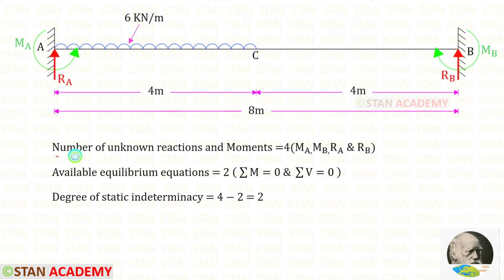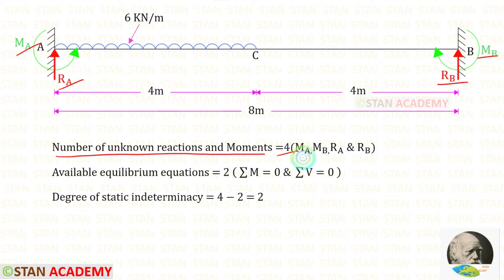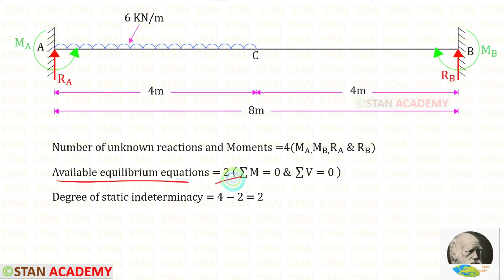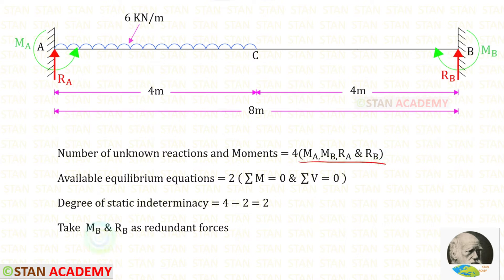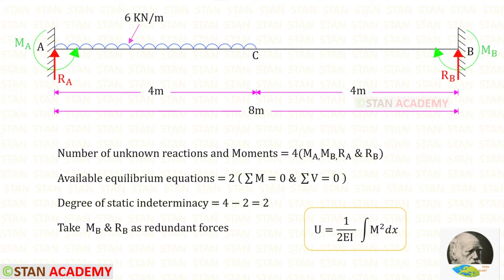In this beam, the number of unknown reactions and moments are 4: the moments Ma and Mb, and the vertical reactions Ra and Rb. The available equilibrium equations are 2. The degree of static indeterminacy is equal to 4 minus 2, which gives us 2. From these 4 unknowns, let us take Mb and Rb as redundant forces.